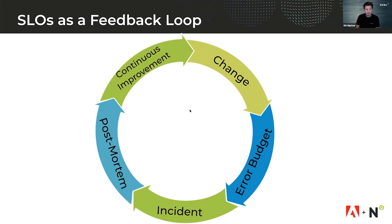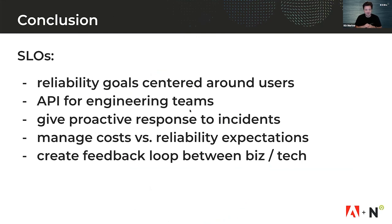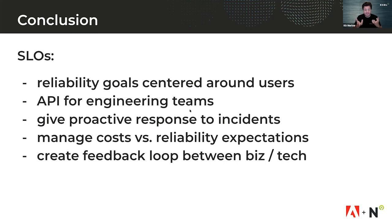Just to wrap up, a few takeaways: number one, what is an SLO? It's a reliability goal that's centered around users. It can be used as the API for engineering teams to figure out what services are breaking and which are working, to help drive better action and improvement. It helps you become more proactive, getting ahead of incidents before they turn into major outages. And it helps you manage costs between the trade-off of engineering and delivering delightful experiences to users. Fundamentally, this creates a business-technical feedback loop that lets you drive continuous improvement.